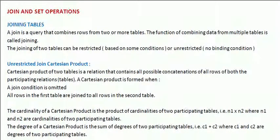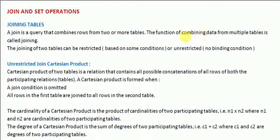In this tutorial we are going to learn about joins and Cartesian product. A join is a query that combines rows from two or more tables. This function of combining data from multiple tables is called joining. The joining of two tables can be restricted based on some conditions or unrestricted.